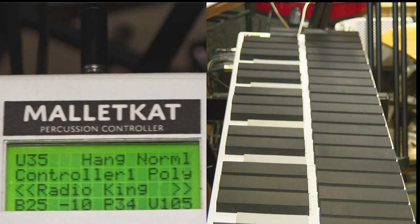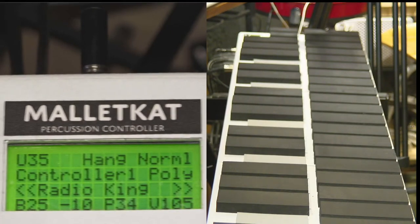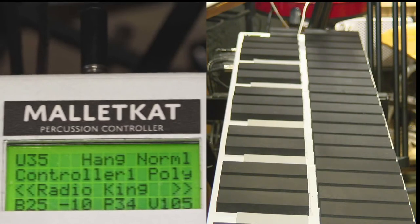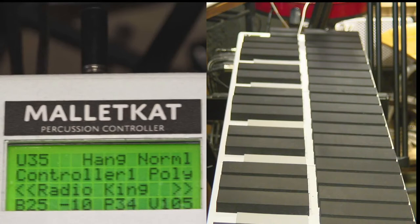If you want to use the foot controllers on the back of the Malletkat to control a continuous controller, you assign the controller number and value in the kit auxiliary screens.